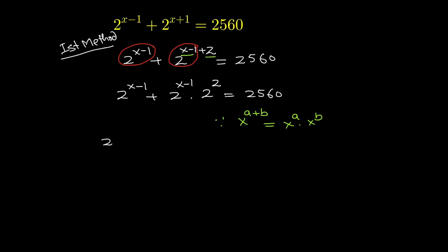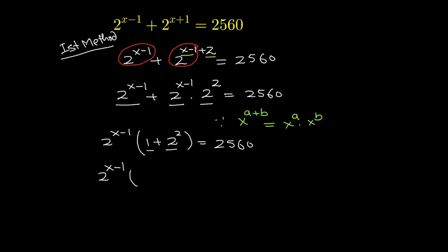Taking 2 raised to the power x minus 1 common from the left hand side, we get 2 raised to the power x minus 1, times the quantity 1 plus 4, which is 5, is equal to 2560. So this gives us 2 raised to the power x minus 1 is equal to 2560 divided by 5.